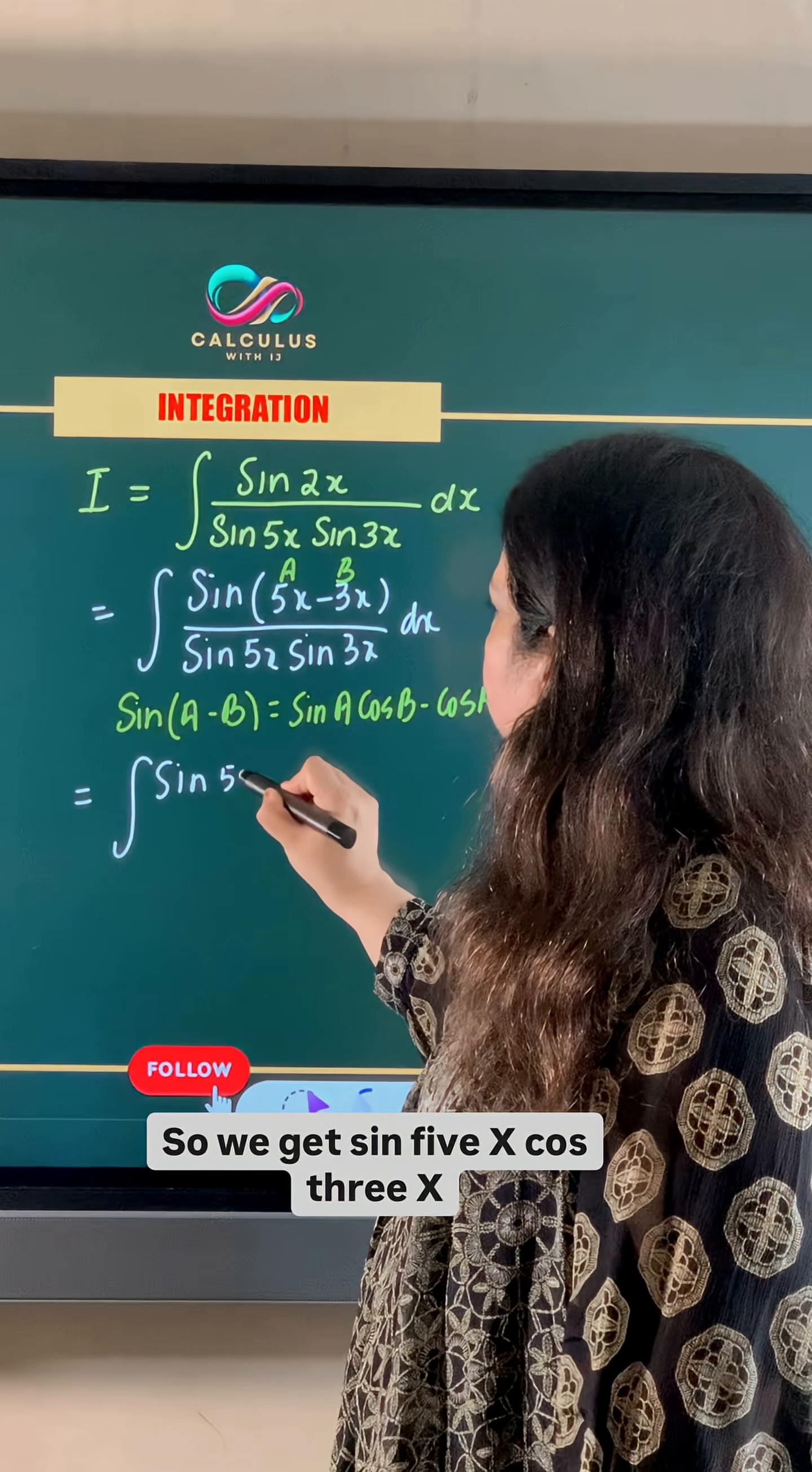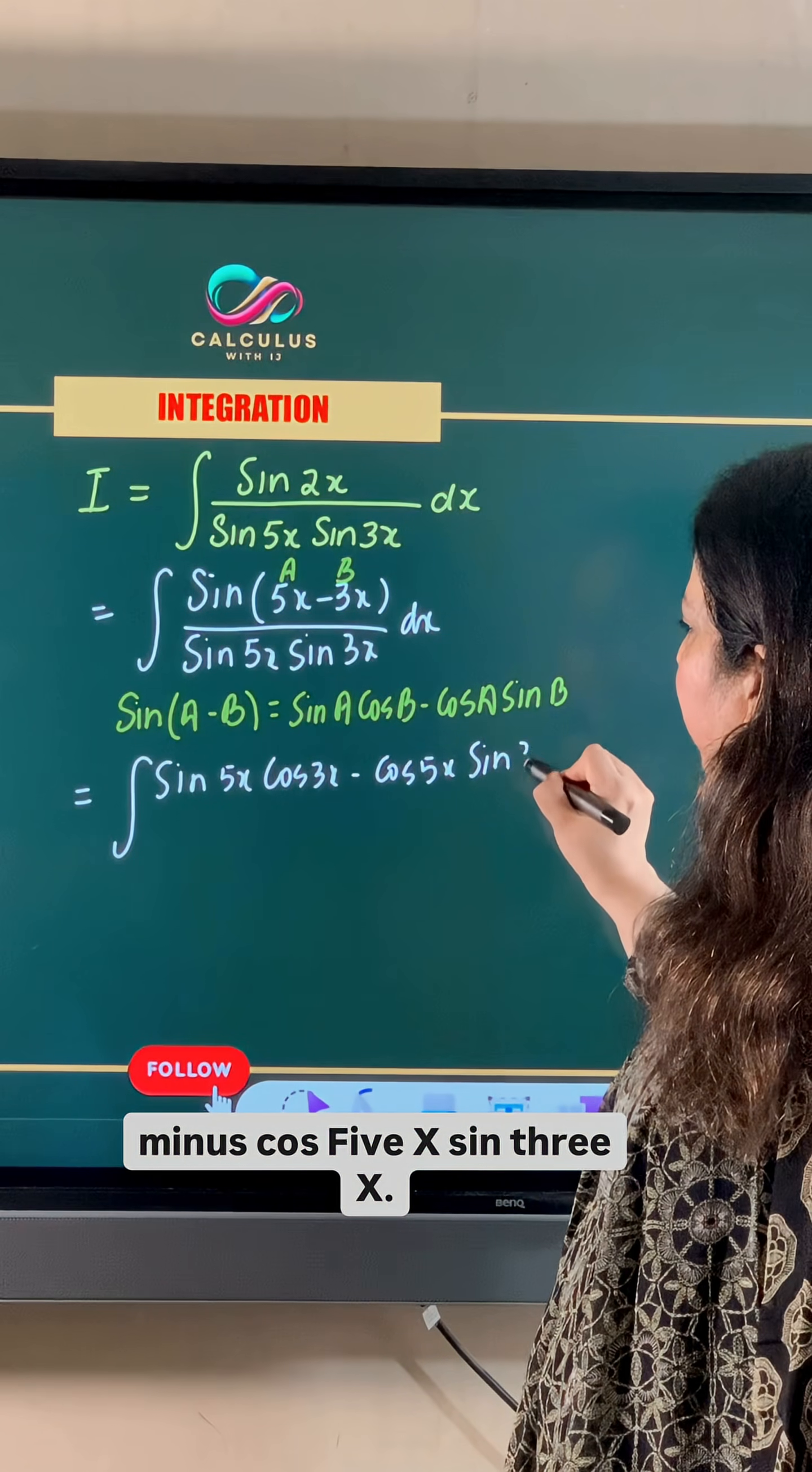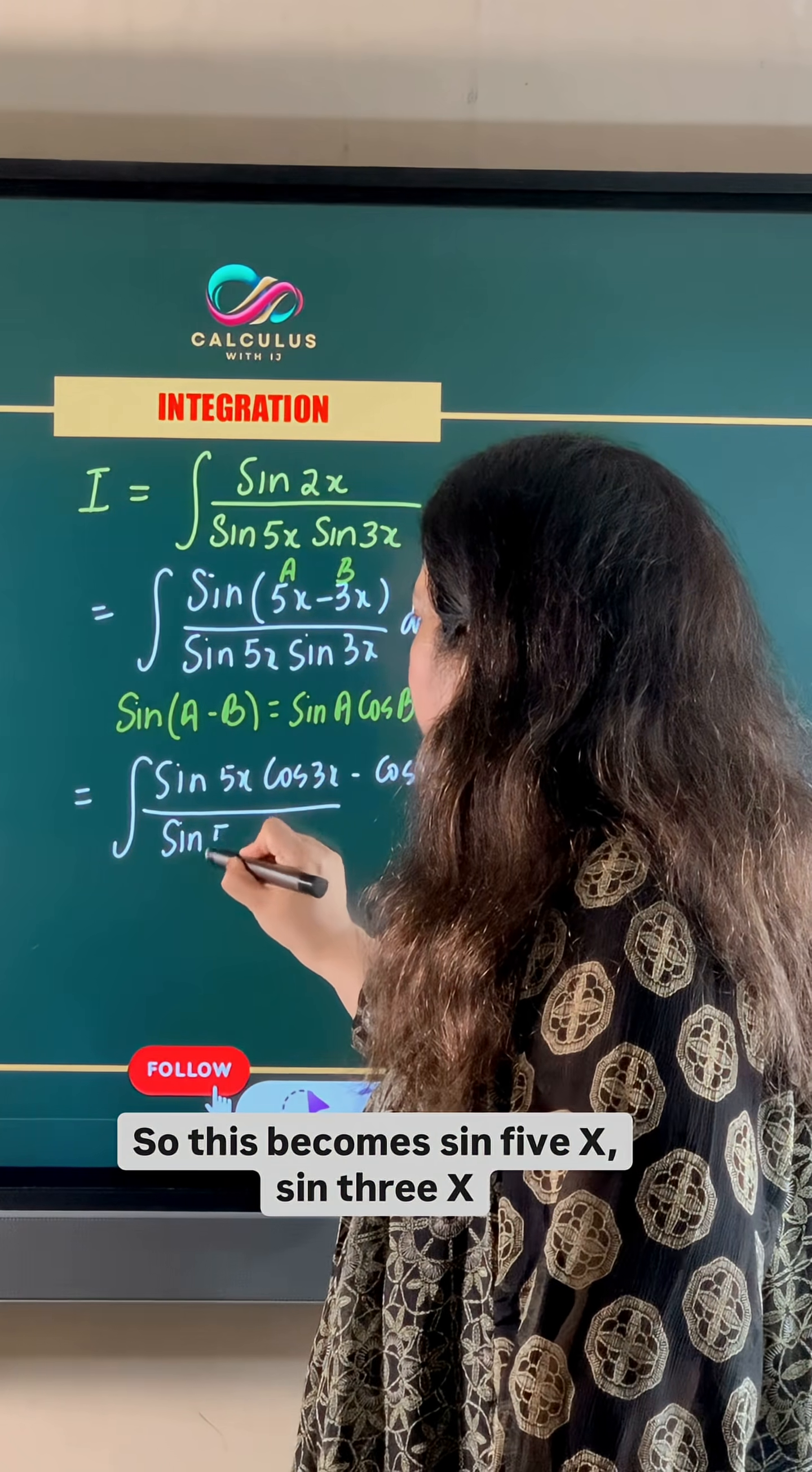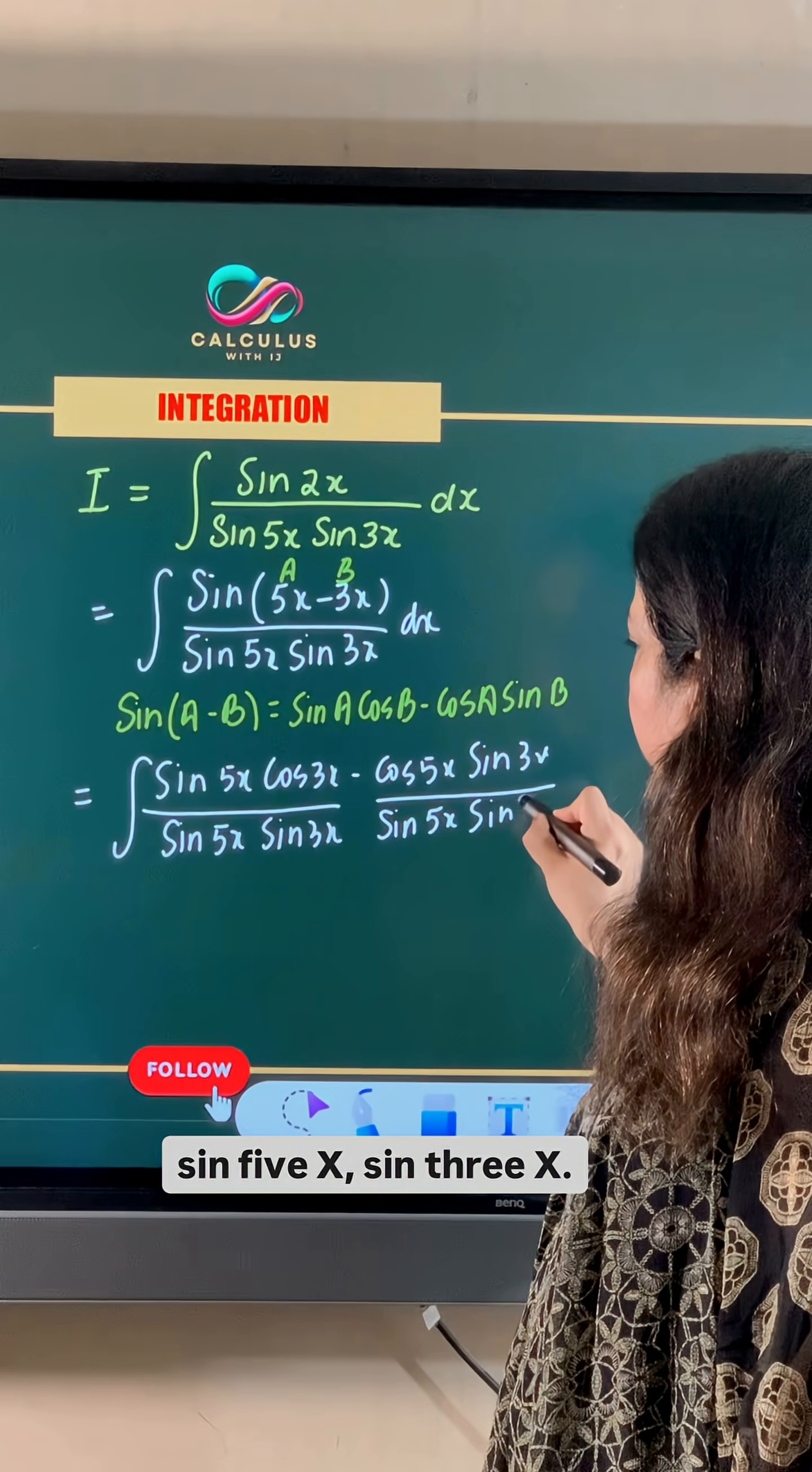So we get sin 5x cos 3x minus cos 5x sin 3x. Let us write the denominator separately under each term. This becomes sin 5x cos 3x over sin 5x sin 3x minus cos 5x sin 3x over sin 5x sin 3x.